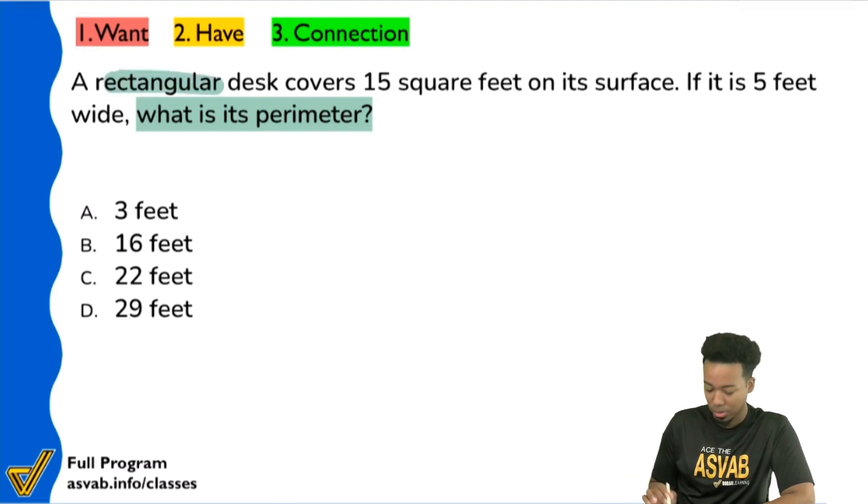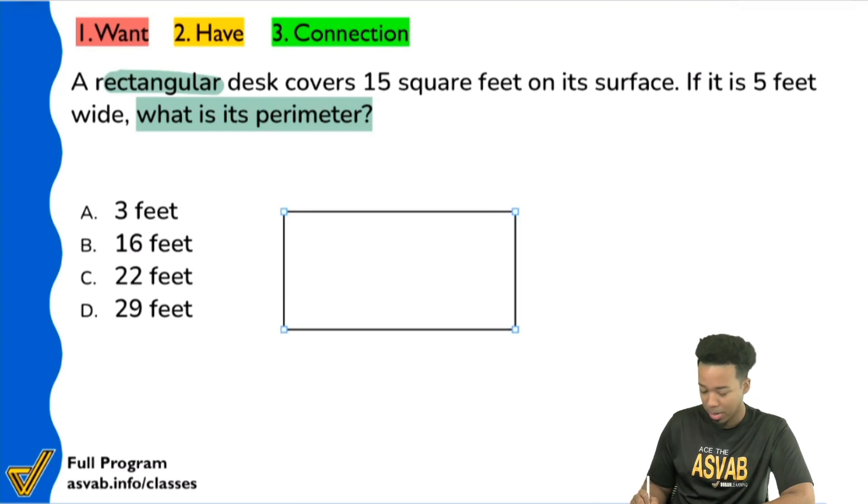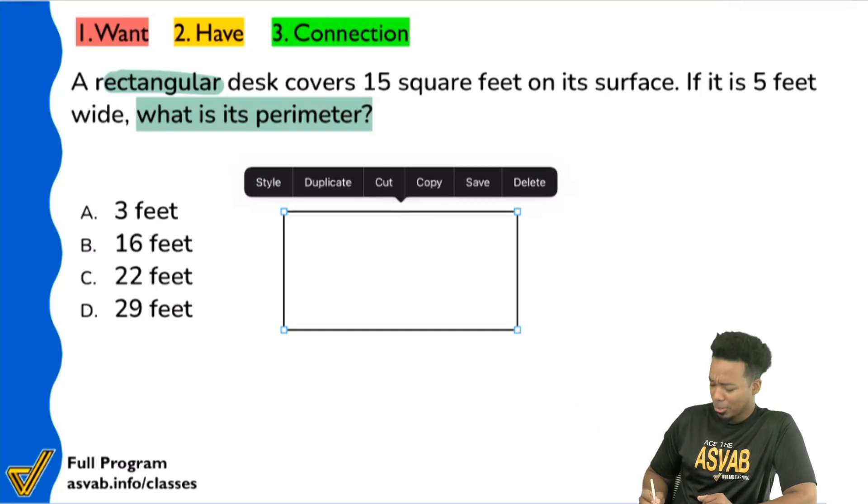And so we see that it says a rectangular desk. So of course, I can imagine this myself, I can draw a nice, perfect rectangle, again, no help needed by technology, again, we're perfect. So we have that.